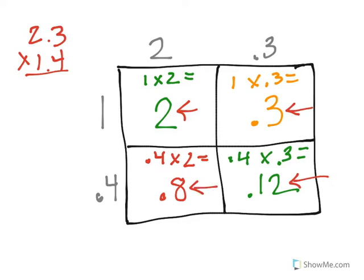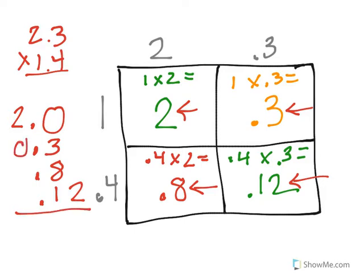So if I were to line them up: 2.0, which represents 2 wholes, 0.3, 0.8, and 0.12. I am going to add some zeros here.